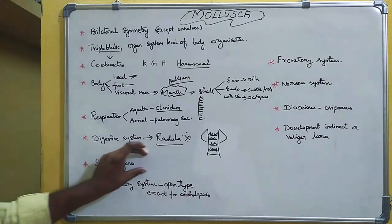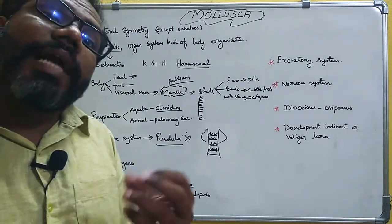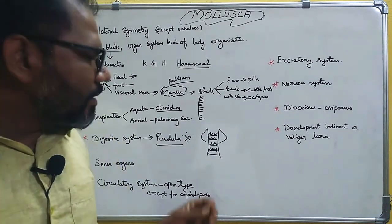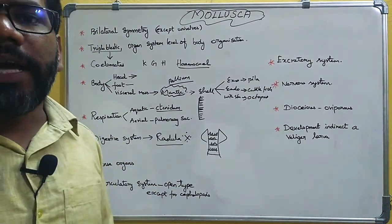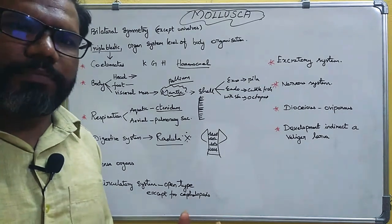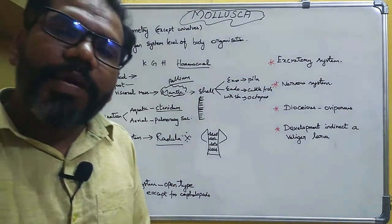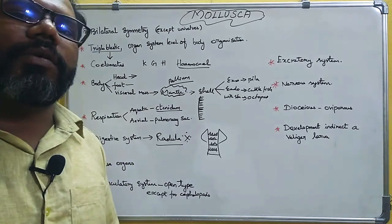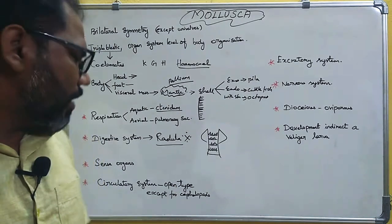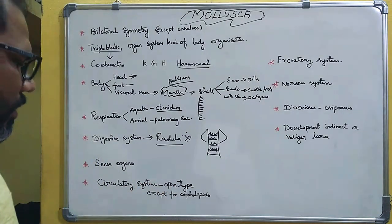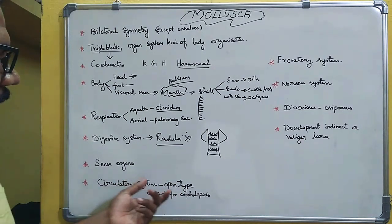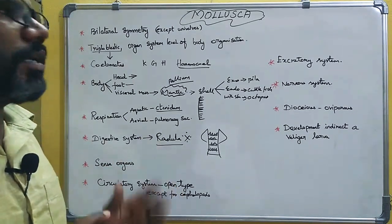Sensory organs include statocysts, which are balancing or equilibrium organs. Another important sensory structure is the osphradium, located at the base of the ctenidia. The osphradium is a chemosensory organ present in mollusca.